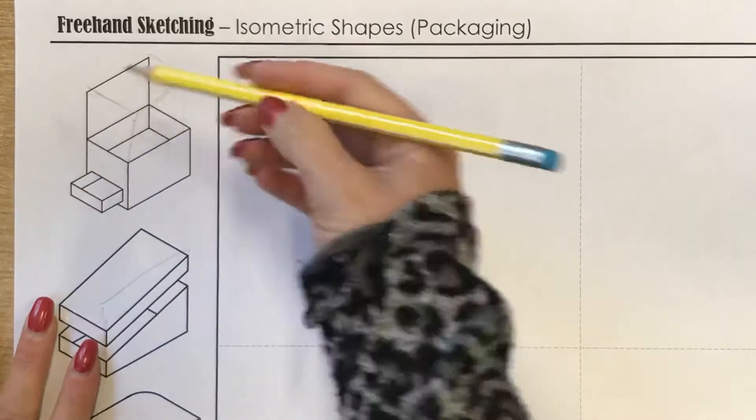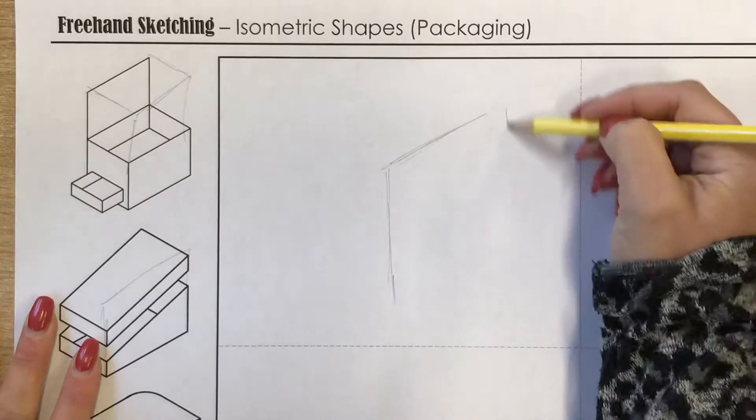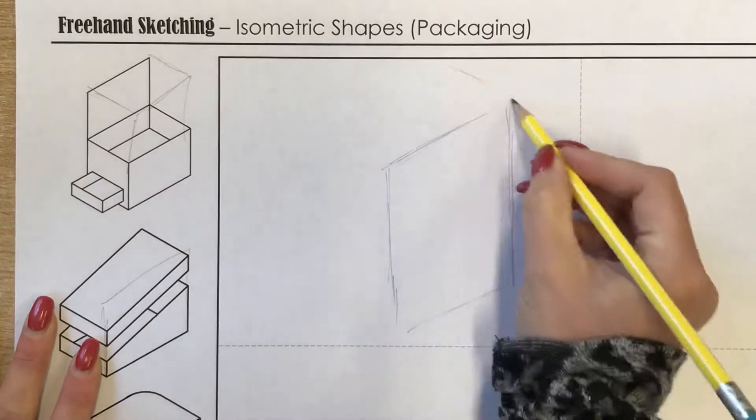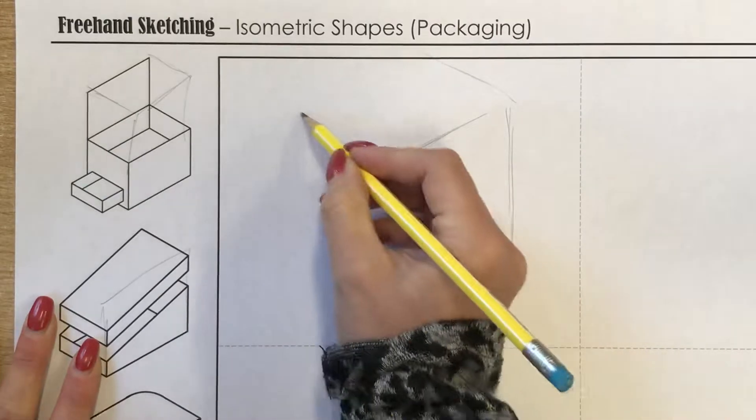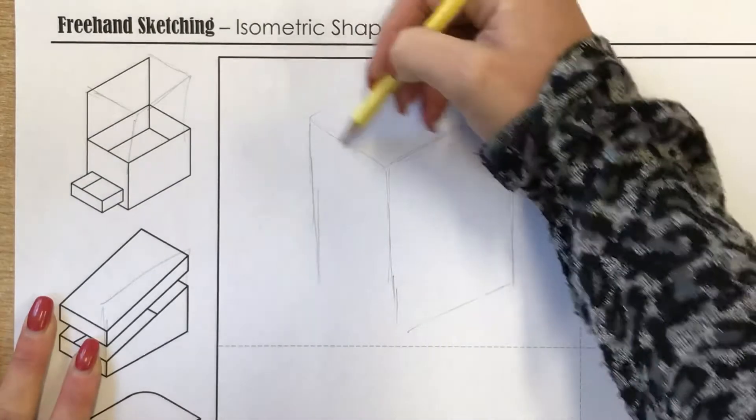If we were going to do this one, we would very carefully draw it. The idea of freehand is the lines are not perfect, but you do want to try and get them parallel. There's no point drawing one at an angle if it doesn't match the other lines you've already drawn.